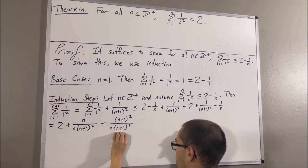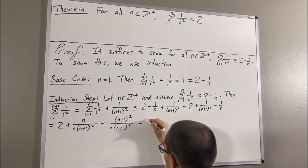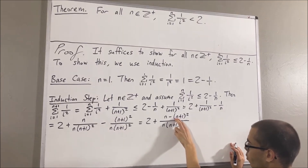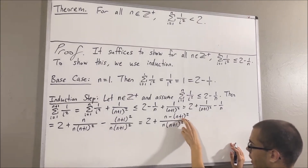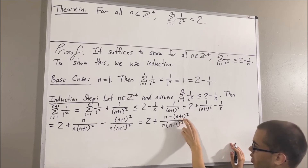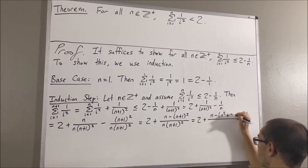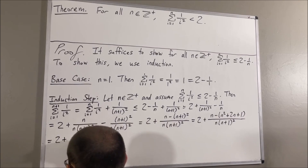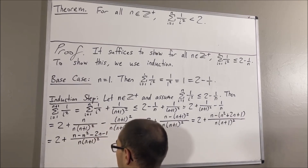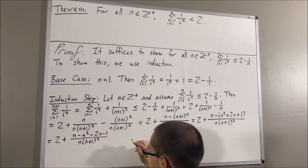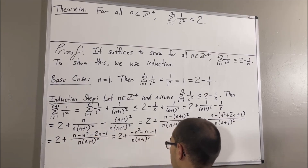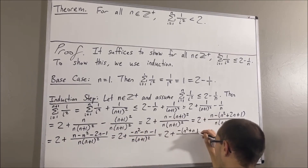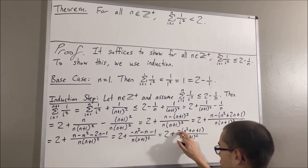Now that we have the same denominator, we can combine these two fractions into a single fraction. If we expand out what we have here, (n+1) squared is the same thing as n squared plus 2n plus 1. Then let's distribute the minus sign across — n minus 2n gives us minus n. And now let's factor out a minus sign in the numerator, which can just be pulled out to the front of the fraction.